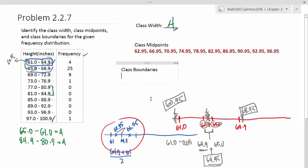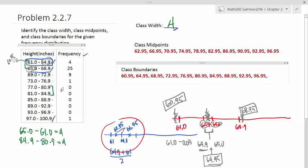So our boundaries start with 60.95. And then we'll take a look at each of the upper classes and just add one more or 0.05 to it. So we got 64.95, and then we got 68.95, and then 72.95, and then 76.95, etc. We get to our last one. That is 100.95, and that would be our class boundaries.